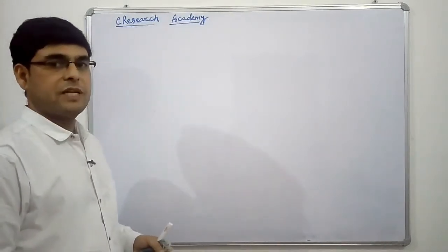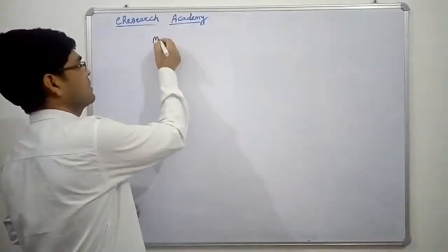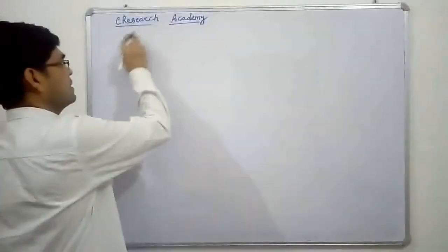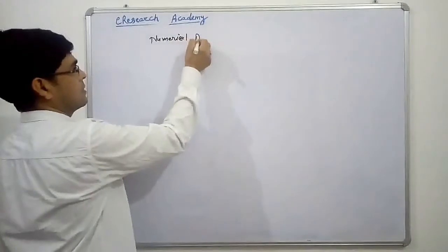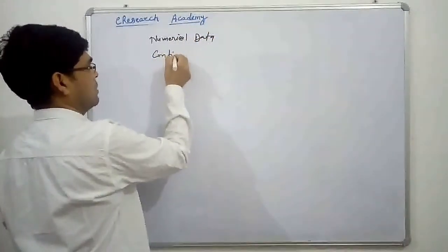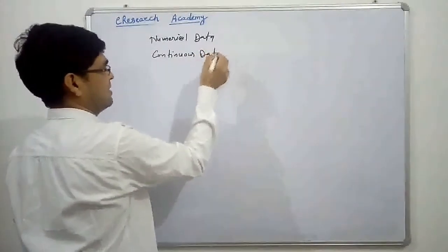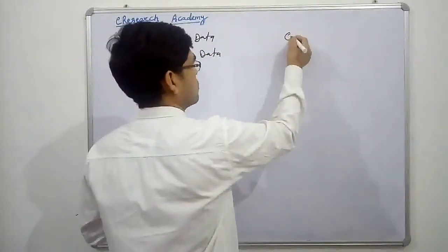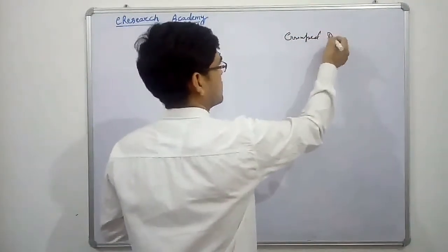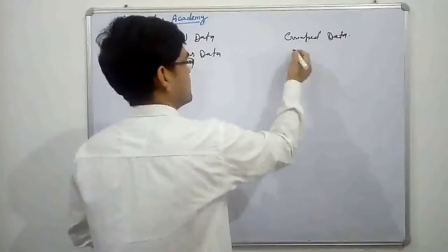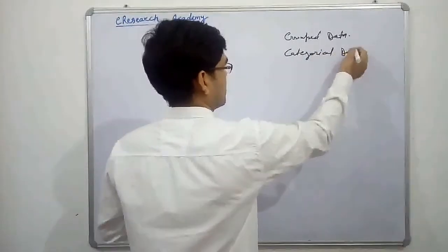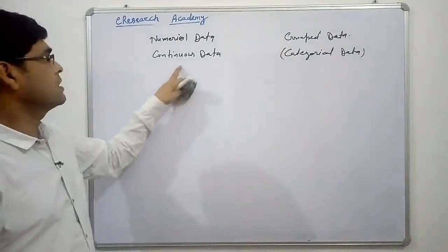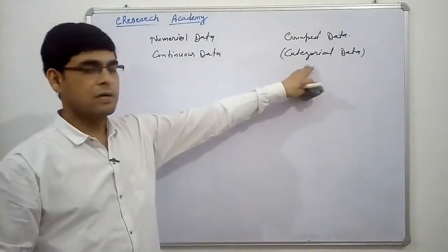So friends, we have two types of data. The first one is numerical data or continuous data. And second, we have non-numerical or grouped data, also known as categorical data. We have different methods to calculate the correlation value under these numerical and categorical data.